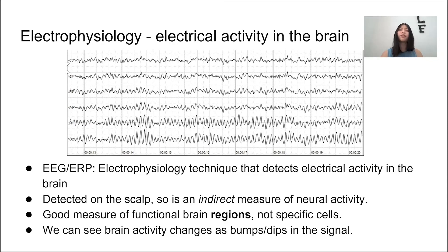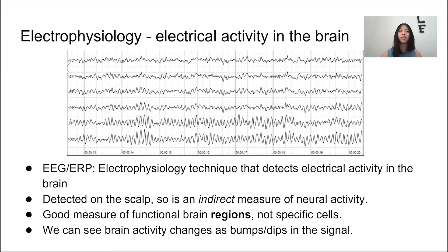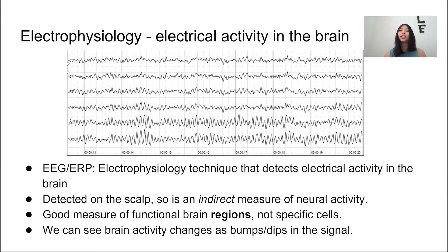When a neuron fires, an electric potential is generated, but usually that signal is far too small to detect. Instead, the EEG activity we record is actually the summation of thousands or even millions of neurons that have similar spatial orientation and are firing relatively synchronously.